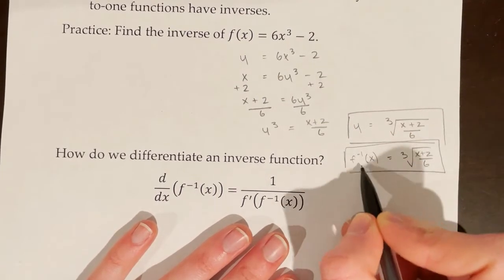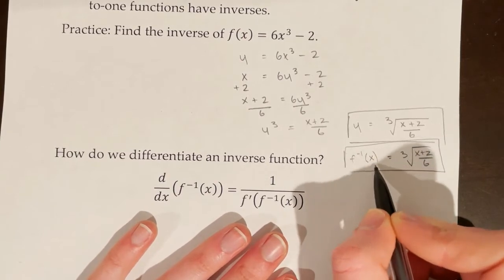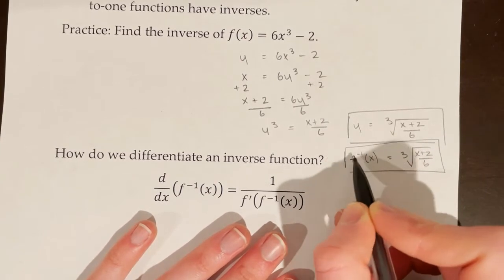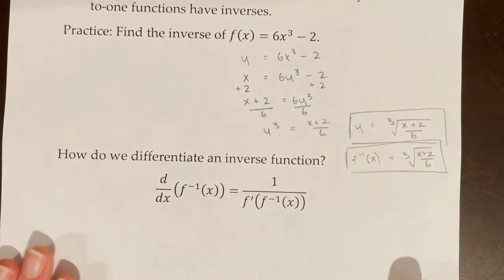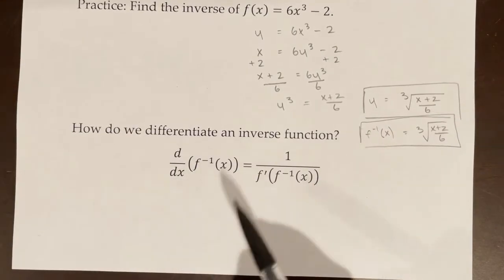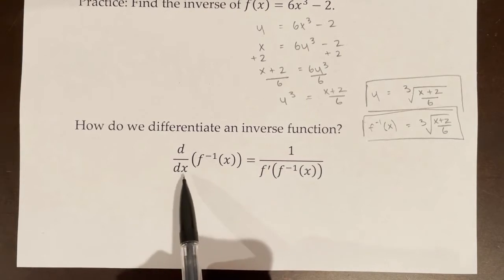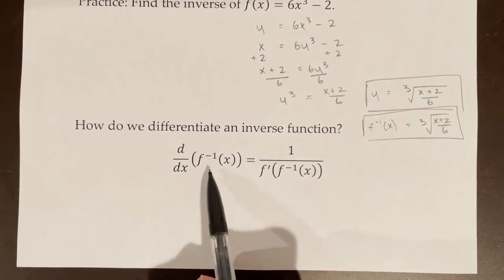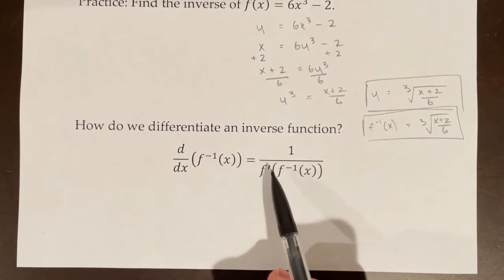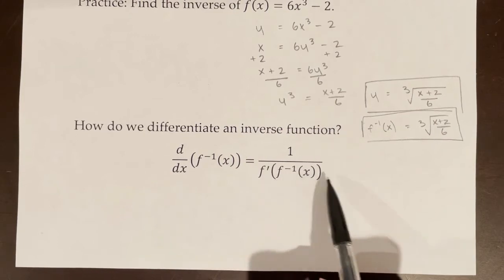f inverse of x looks like f to the power of negative 1 of x, but don't get these two confused — this notation just means f inverse of x. We have a special rule for differentiating an inverse function: if we're trying to take the derivative of f inverse of x, that is equal to 1 over f prime of f inverse of x.